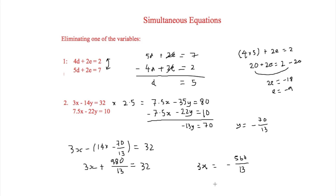Dividing by 3, we get x equals minus 188 over 13.